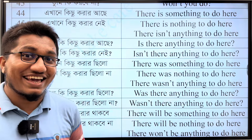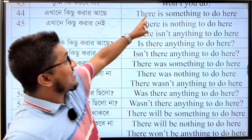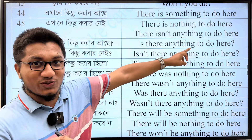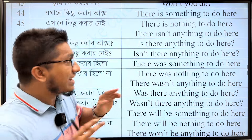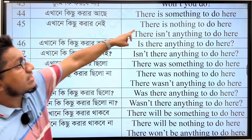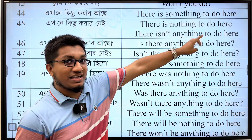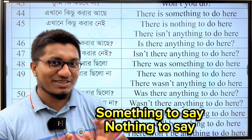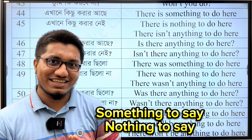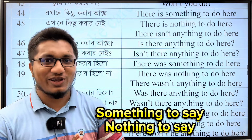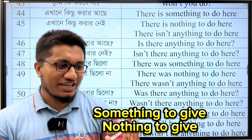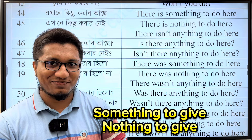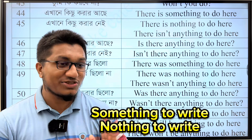How can you say there is something to do here? There is something to do. There is nothing to do here. Something to say. Something to give. Nothing to give. Something to write.